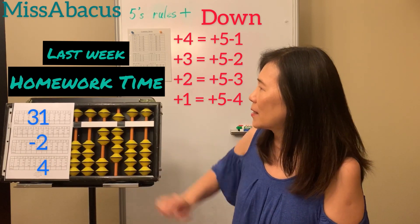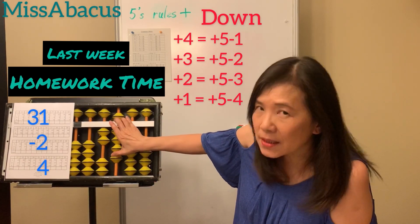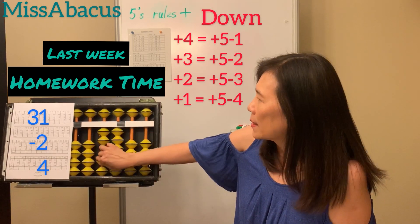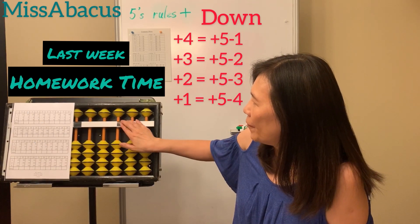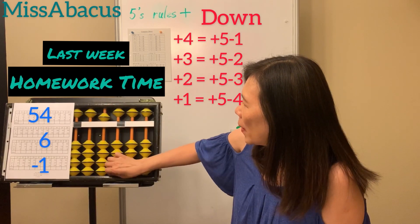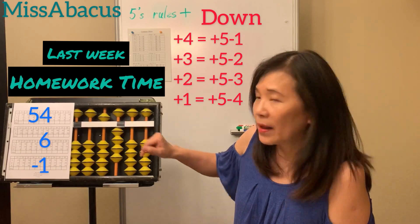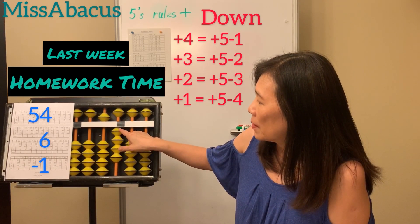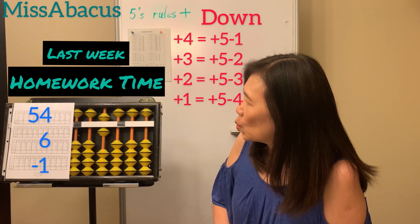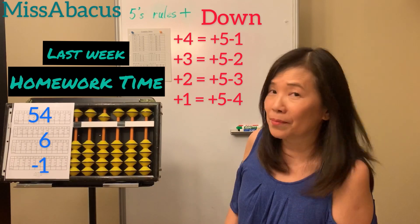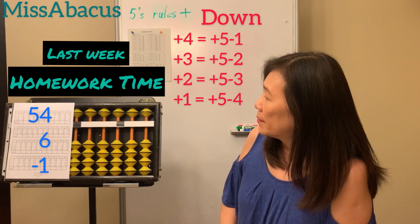Let's do number four: 31. Minus two again — not enough. Minus ten, plus eight. Plus four — minus six plus ten. Answer 33. Let's do number five: 54. Plus six — only five left, tens rule. Six's complement is four, so minus four plus ten for the six. Minus one — minus ten plus nine, because you have nothing here. Answer 59.